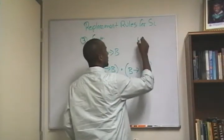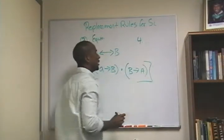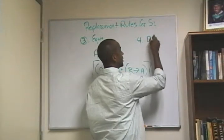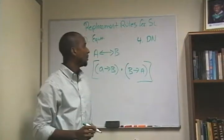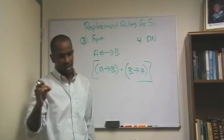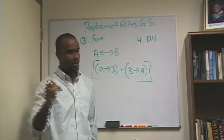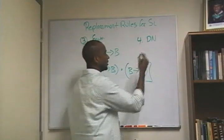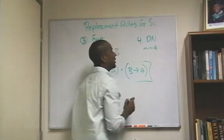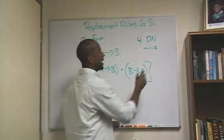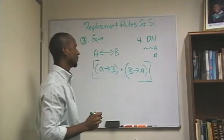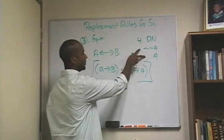The last one is very simple: double negation, abbreviated DN. With double negation, if you have not-not-A, then I can simplify not-not-A to just A. So those two are the same.